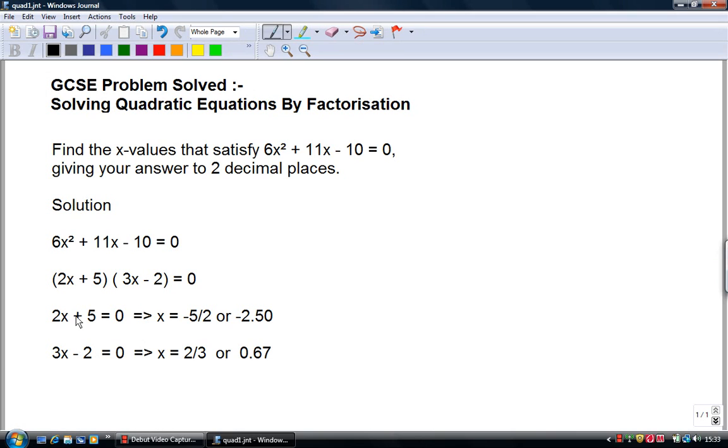And there's the quick solution. So what we've got is 6x² + 11x - 10. The 6x² is split between the two brackets as 2x and 3x. I'll explain how shortly. And the -10 is split between +5 and -2.